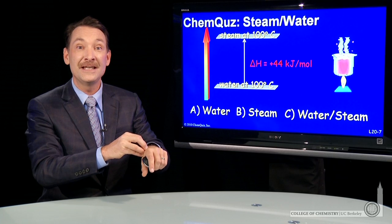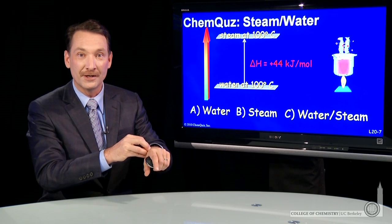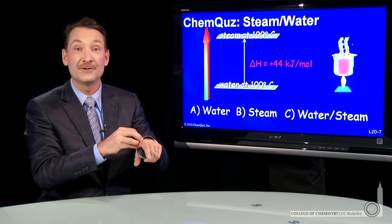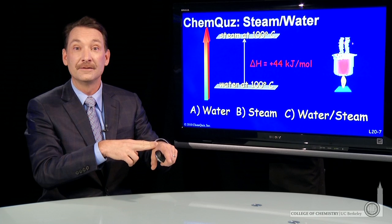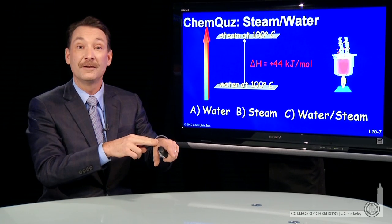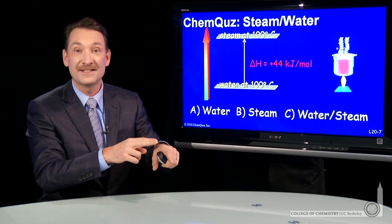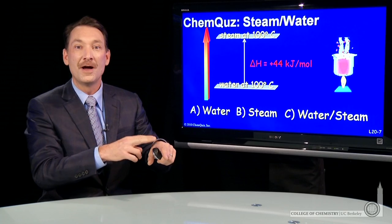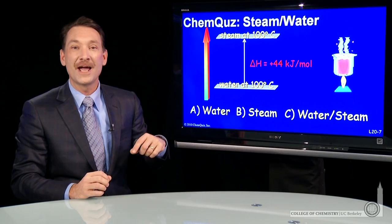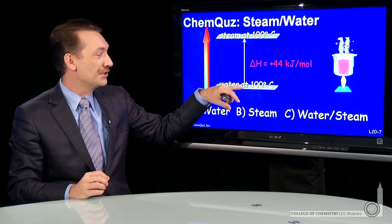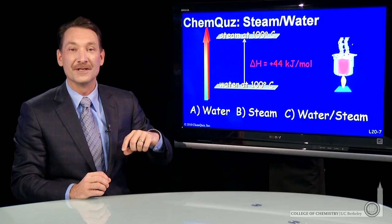So when you come in contact with steam, it can condense back to water and release 44 kilojoules and burn your skin. And then you have water at 100 degrees C still on your skin. So steam has 44 extra kilojoules to burn you with over water at 100 degrees C.